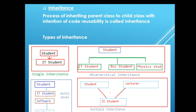Talking about the types of inheritance, there are 4 types of inheritance in C#. One is single inheritance, another one is hierarchical inheritance, third is multilevel inheritance, and fourth is multiple inheritance.